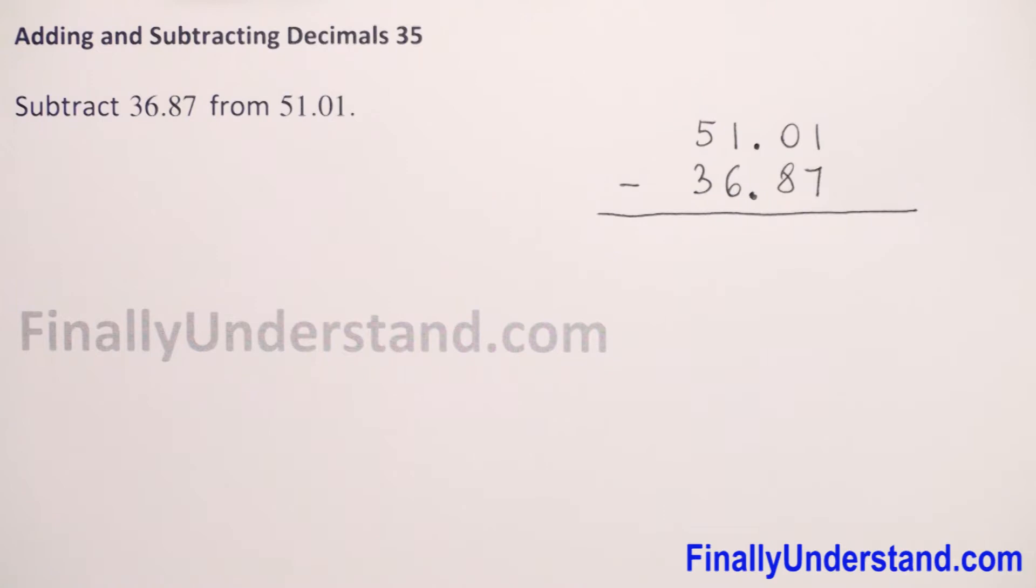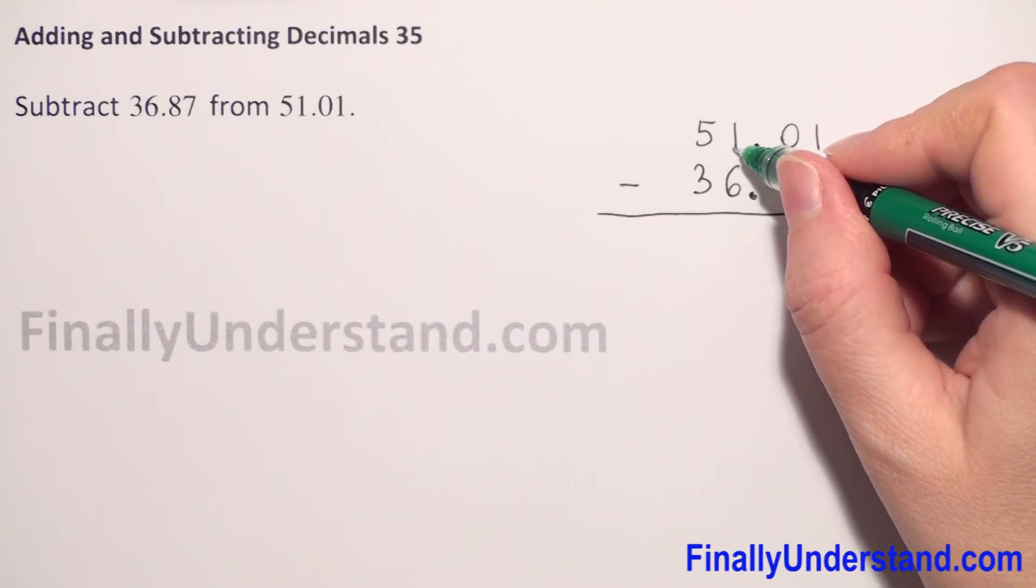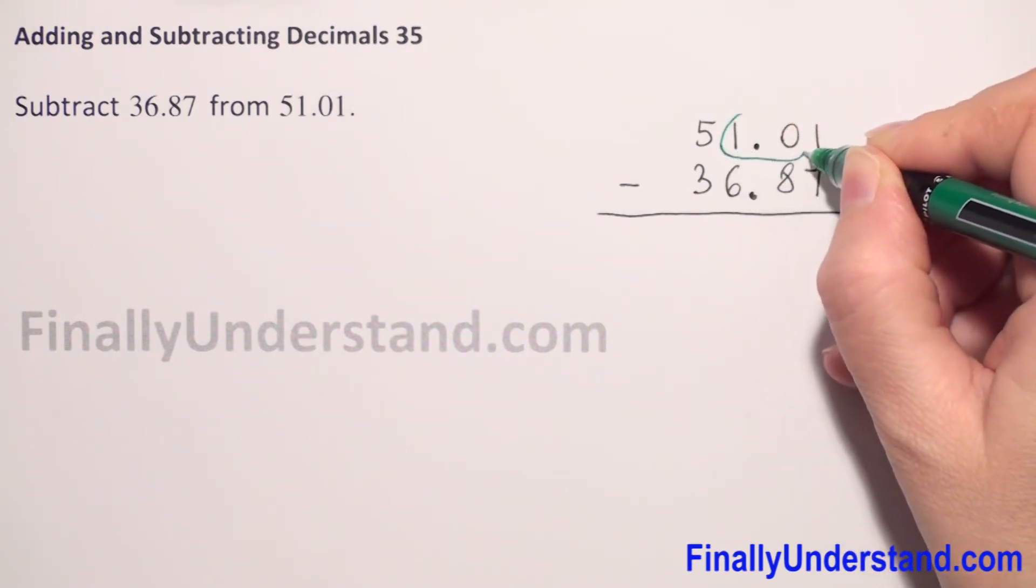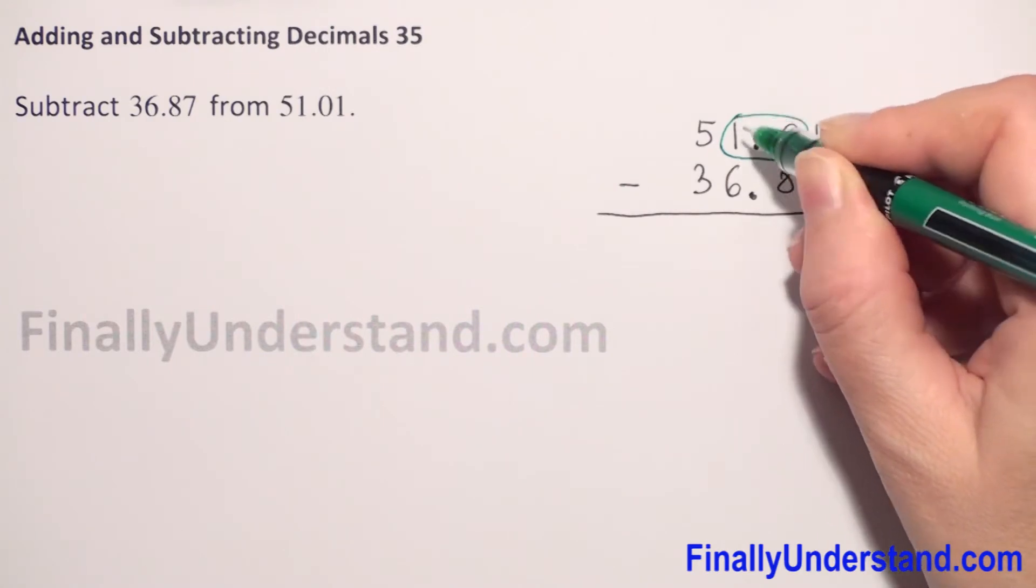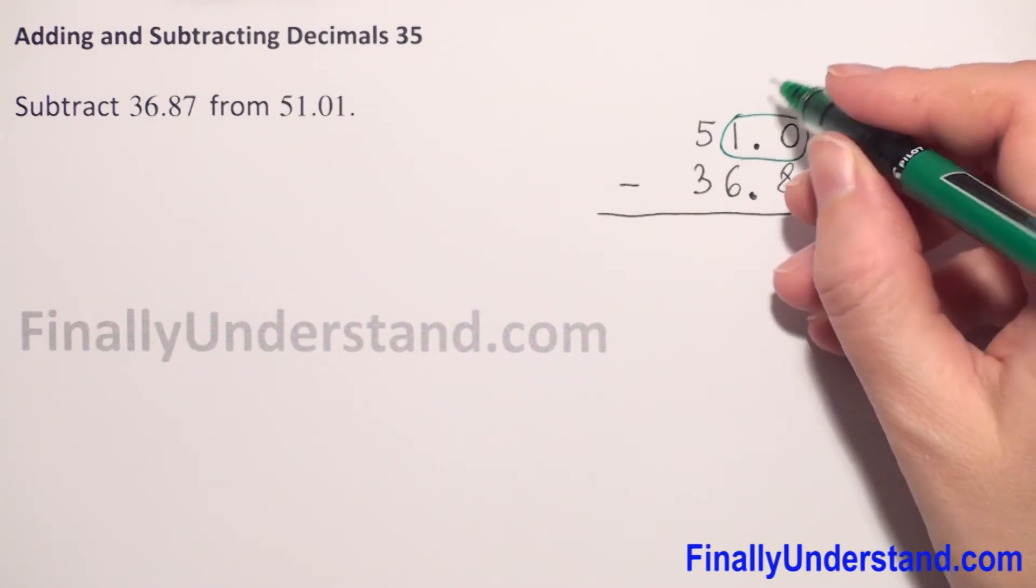So we need to do borrowing. We borrow one from the next column, but we have zero here, so we go to the next digit and treat these two digits like one number. 10 minus 1 is 9, so we have 9 here and 0 now.